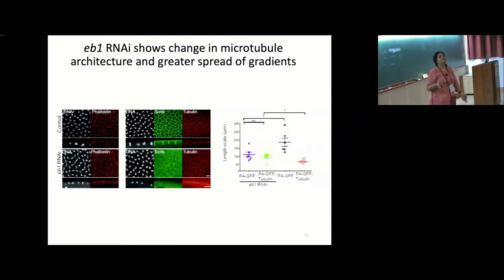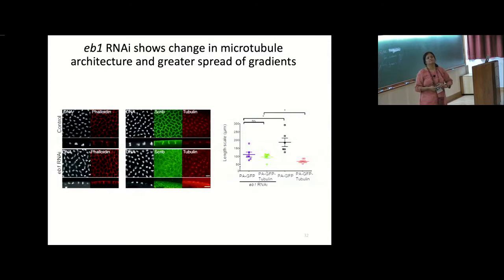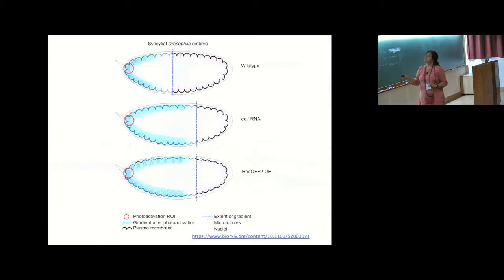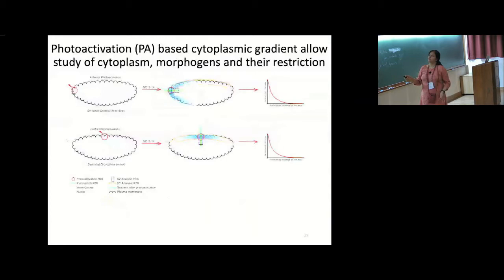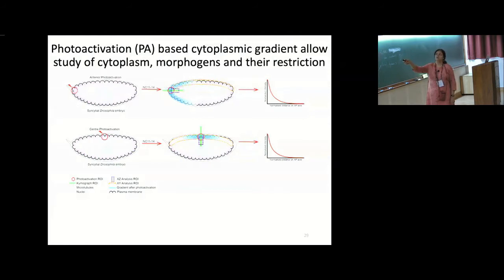We see uniform diffusion along the dorsal-ventral and anterior-posterior axes — we don't see a difference in spread comparing the dorsal and ventral directions, or the anterior and posterior directions. The interesting difference is between the cortical direction and the depth direction. The length scale inward into the embryo is smaller than the length scale along the cortex. Right now we are not confident whether that is because of architectural differences between the regions or because of increased crowding in one region. Evidence exists for both possibilities.